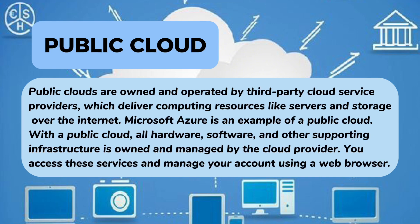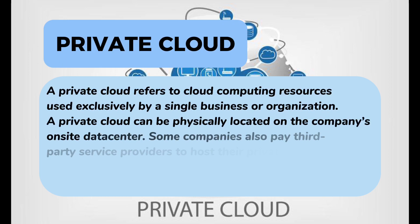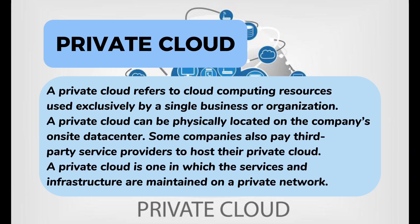With public cloud, all hardware, software, and other supporting infrastructure is owned and managed by the cloud provider. You access these services and manage your account using a web browser. The second type is private cloud. A private cloud refers to cloud computing resources used exclusively by a single business or organization. A private cloud can be physically located on the company's on-site data center. Some companies also pay third-party service providers to host their private cloud, where the services and infrastructure are maintained on a private network.